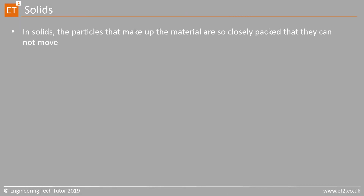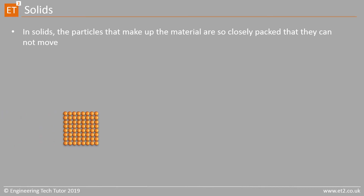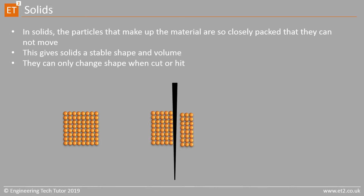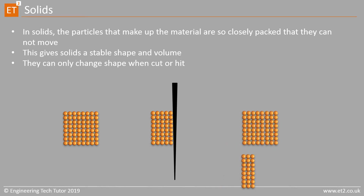In solids, the particles that make up the material are so closely packed together that they cannot move. This gives a solid a stable shape and volume. They can only change shape when they are cut or when they are hit.